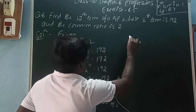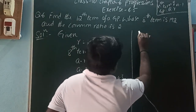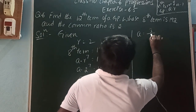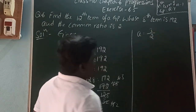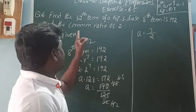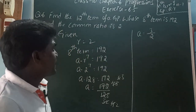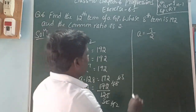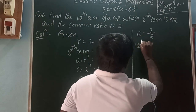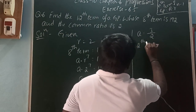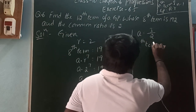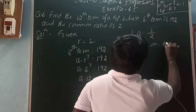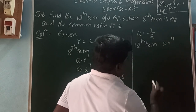So A is equal to 3 by 2. Now, what is being asked is the 12th term of the GP. The 12th term is A into R to the power of 11.